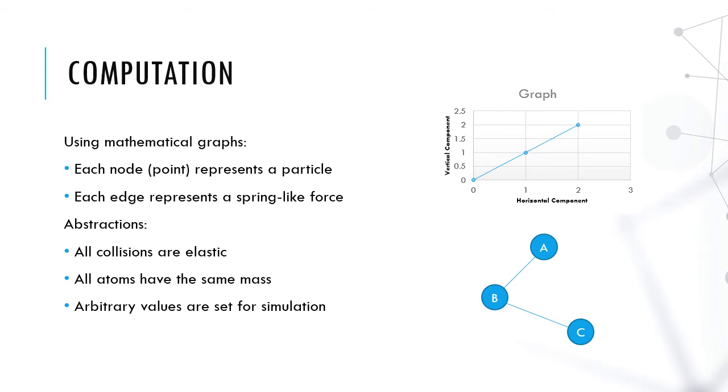We use mathematical graphs to model this behavior. Now, usually when you think of a graph, you imagine two or more axes in a pattern of data. But of course, graphs pertain to almost any visual representation of a relationship between two or more objects. Our graphs, with each node, we represent a particle, and with each edge, we represent the spring-like forces between them, kind of like the figure on the bottom right. Of course, we had to make a couple of assumptions when developing this code.